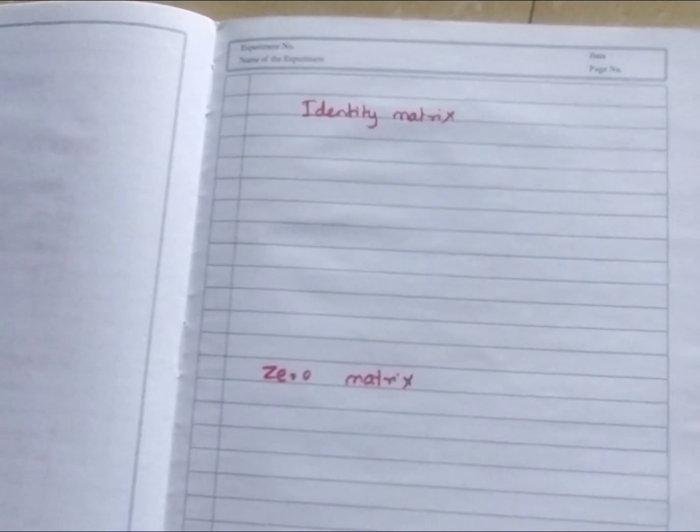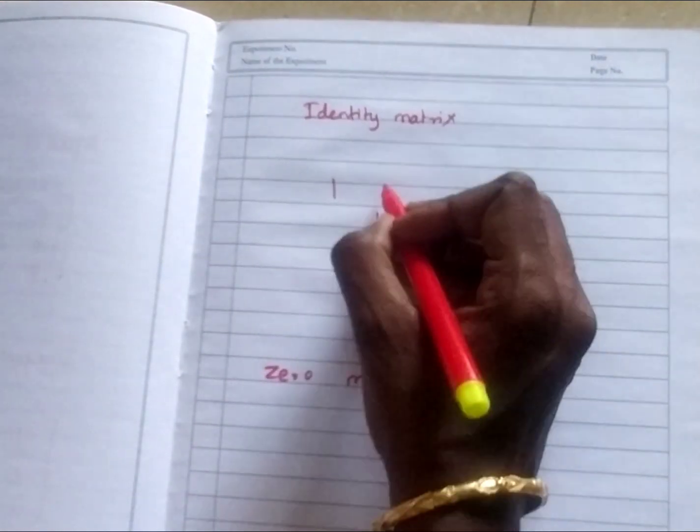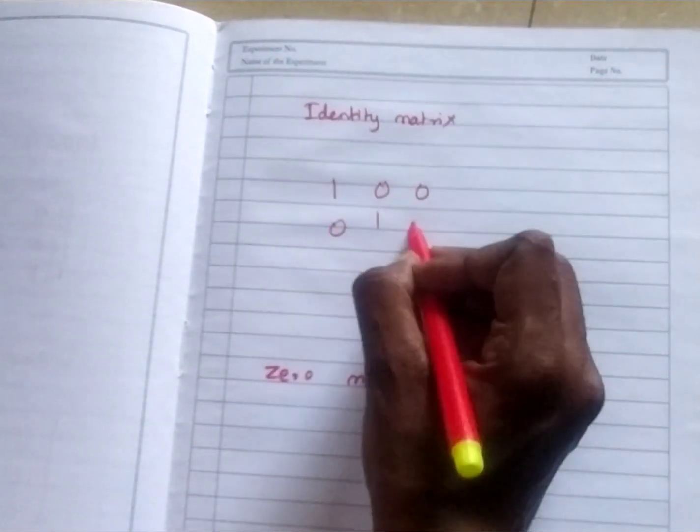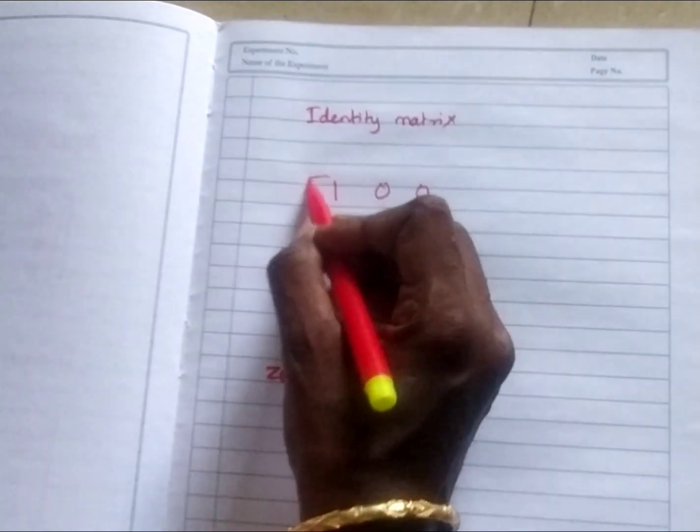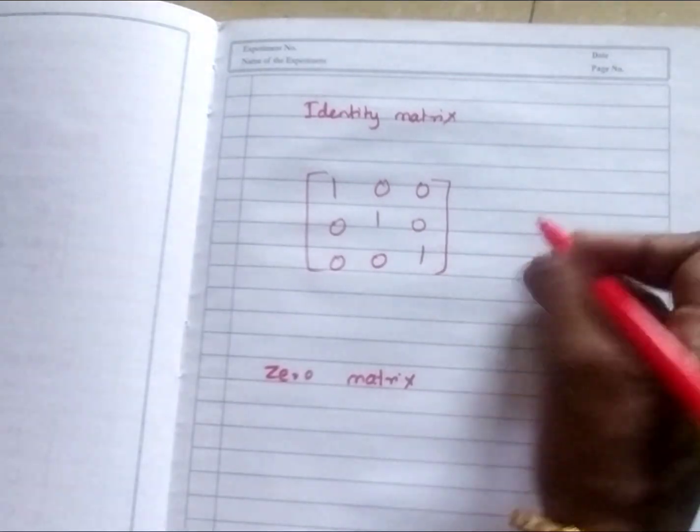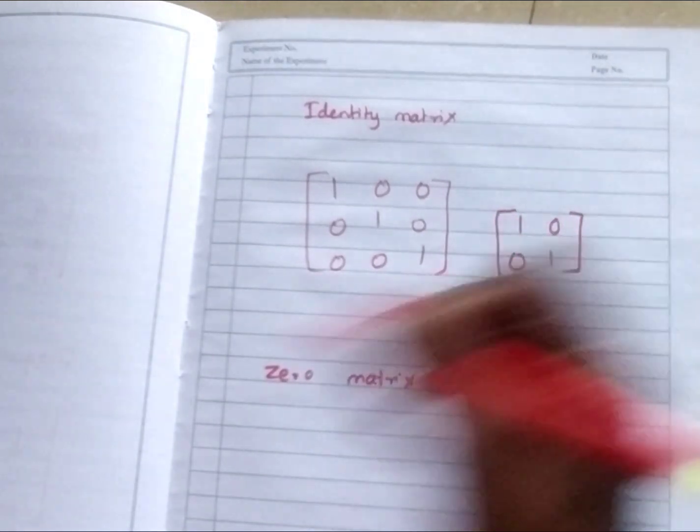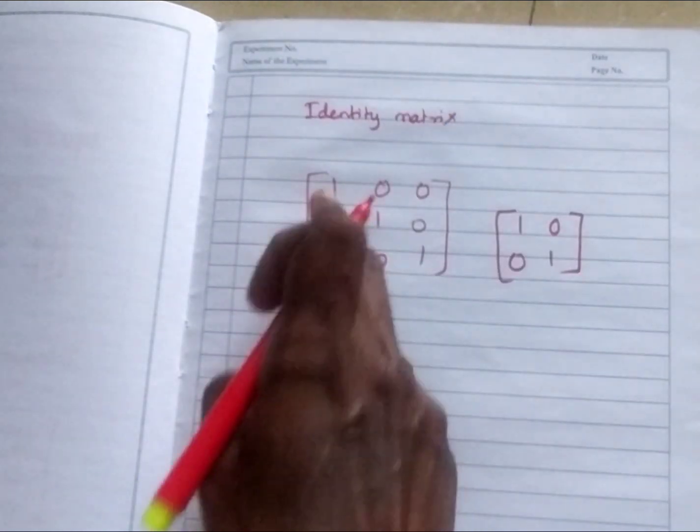Next, identity matrix. In the diagonal, if there are any numbers, it is called diagonal. But in the diagonal, there is only 1. Like this. Others are all 0. It is actually a diagonal also, but if it is only 1, it is called identity matrix. 1 in diagonal.